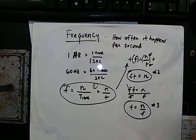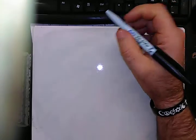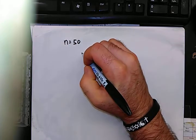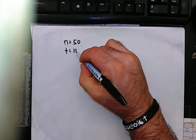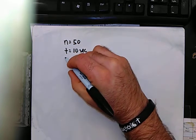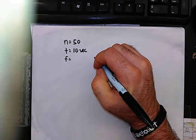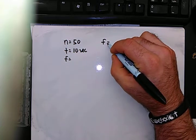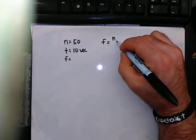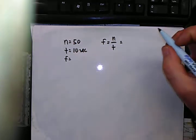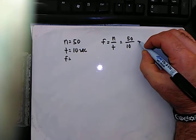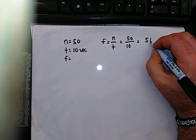A typical example: an object travels around in a circle 50 times — so n equals 50 — in 10 seconds. Calculate its frequency in hertz. We know that frequency equals number over time, so it's 50 over 10, and frequency is 5 hertz.